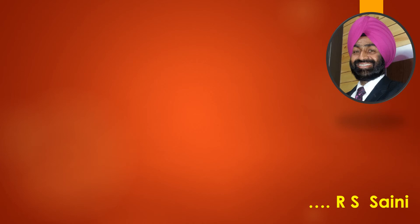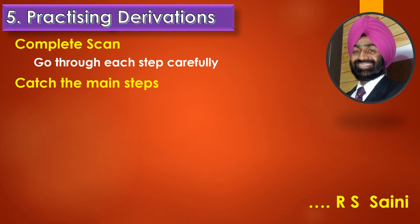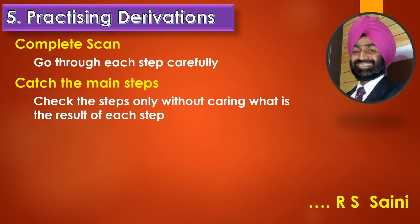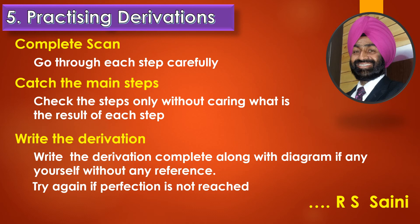How to practice derivations: first, see the derivation completely — a complete scan. Second, go through the steps carefully and learn what the key steps are — what was multiplied, why it was multiplied, what was divided by, and so on. Keep these main steps in mind and then practice by writing the derivation without seeing the notebook. Once you have written it yourself without seeing, the derivation is ready. If perfection is not reached — if you forget steps or the result doesn't match — try again until you are satisfied that you can write it in the exam without seeing.